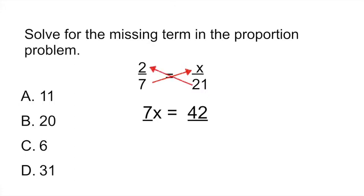Once you've done that now you have to find your x value. So you would divide the left side by 7, that's going to cancel out, and then the right side by 7, and that gives you x equals 6.